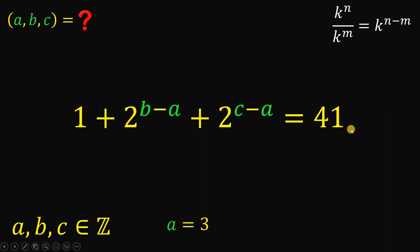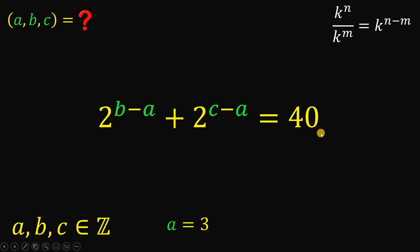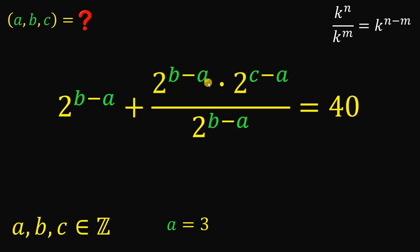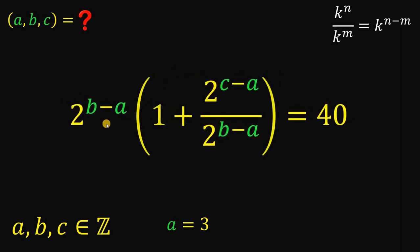Now, let's set aside this result. Given the remaining equation, what we're going to do is to subtract 1 on both sides to cancel out the one. This gives us 2 raised to B minus A plus 2 raised to C minus A equals 40. We will do the same thing again — factor out 2 raised to B minus A. But we don't have a factor of 2 raised to B minus A on the term 2 raised to C minus A, so we multiply that expression by 2 raised to B minus A over 2 raised to B minus A. Now we can factor out 2 raised to B minus A, giving us 2 raised to B minus A multiplied by 1 plus 2 raised to C minus A over 2 raised to B minus A equals 40.